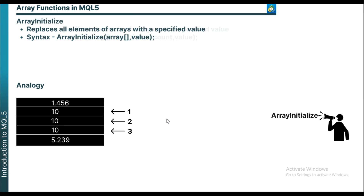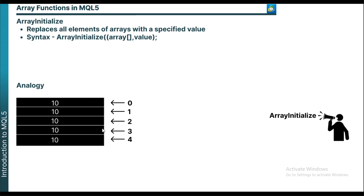Similarly, we have another function called ArrayInitialize. With ArrayInitialize, you cannot specify which elements you want to replace. Instead, it changes all the elements of an array to one single value. In ArrayFill you can choose to change index 1, index 2, index 3 to a specified value, but with ArrayInitialize you can only change all elements at once to a single value — in this case, 10.